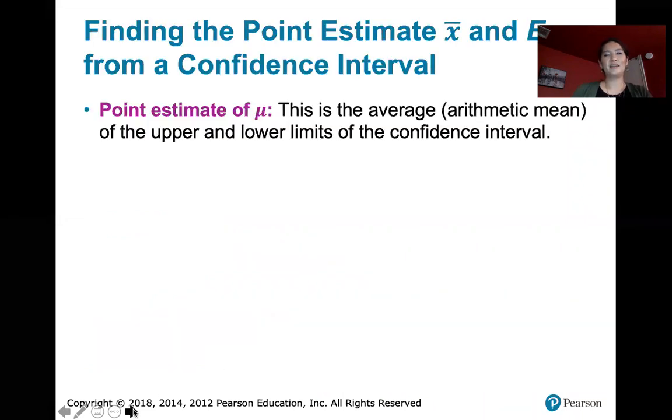Now that point estimate of the population mean is the sample mean, and that's going to be the average or the arithmetic mean of the upper and lower limits of the confidence interval. Remember how we computed that confidence interval in the first place? We took x̄ and we added the error to get the upper limit and we subtracted the error to get the bottom limit.